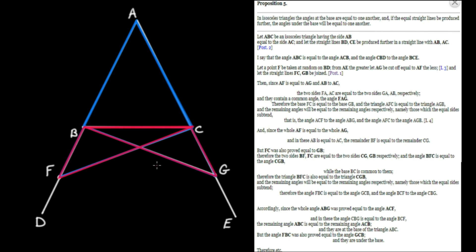And angle BFC equals angle CGB — that also follows from the equality of the blue triangles. Therefore triangle BFC is equal to triangle CGB. Notice side-angle-side again: the short side BF equals CG, and BG equals CF. We use Proposition 4 to infer these two red triangles are the same.